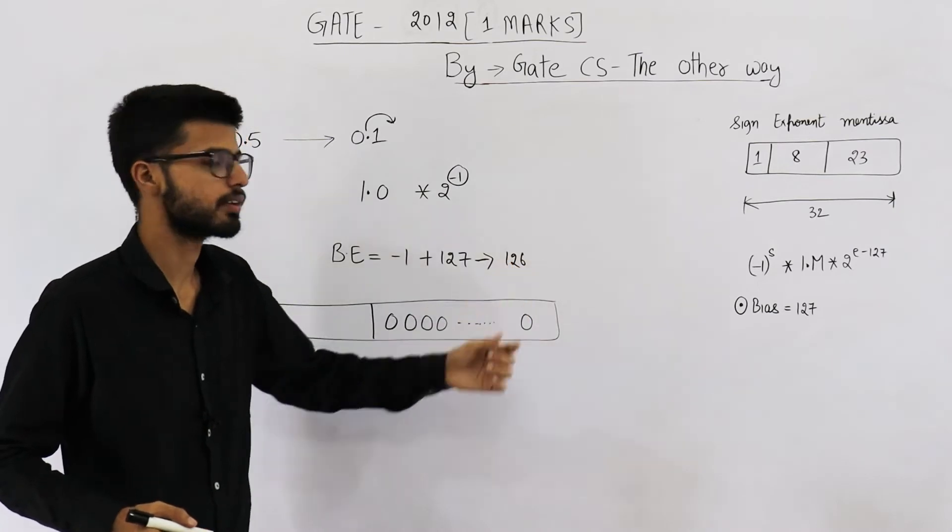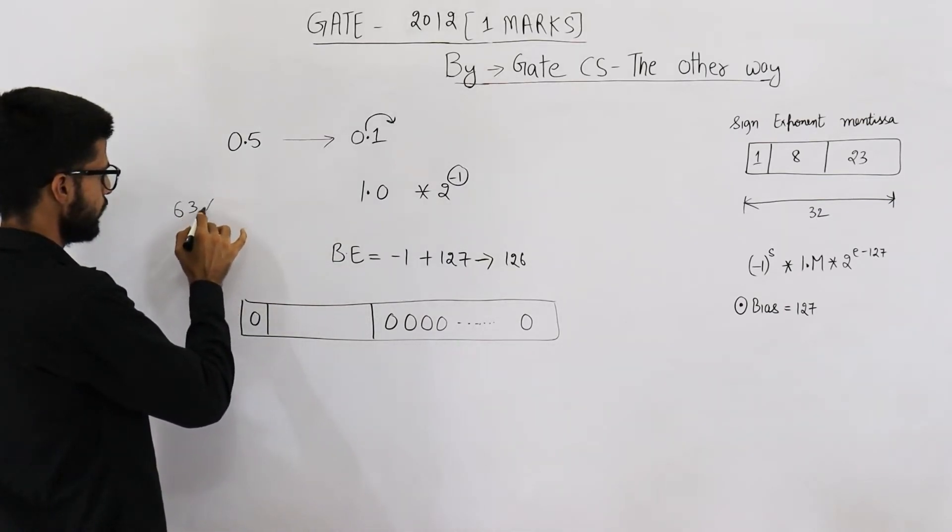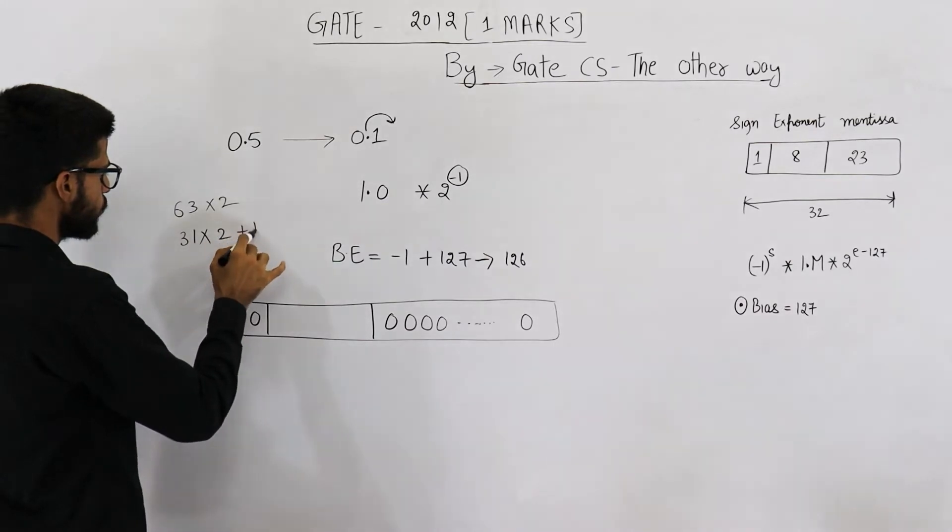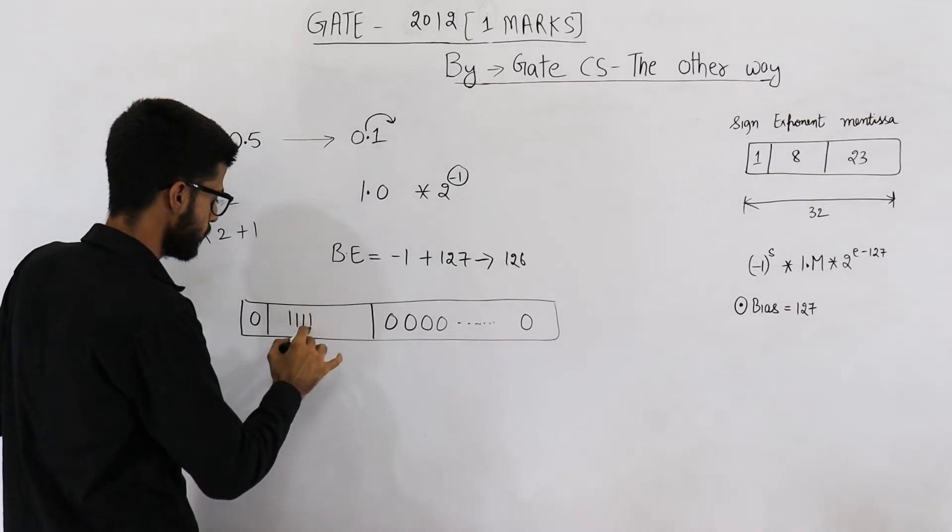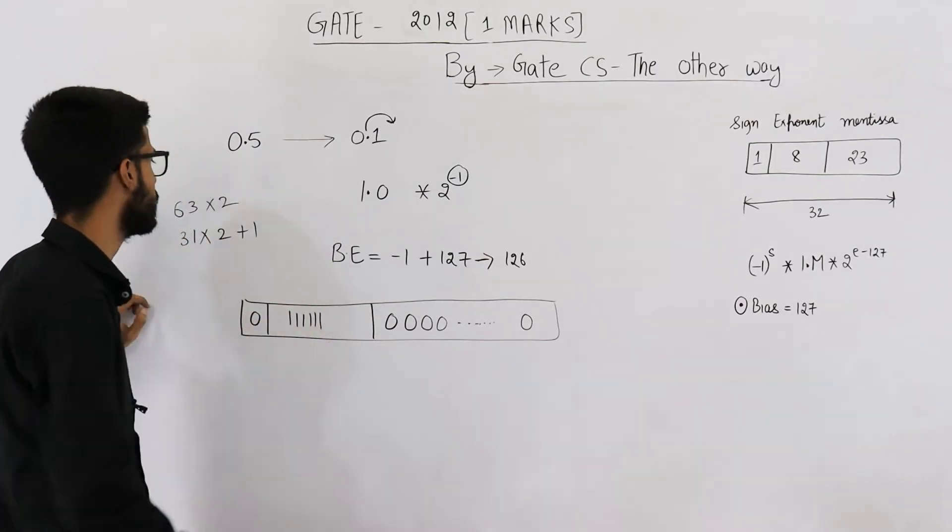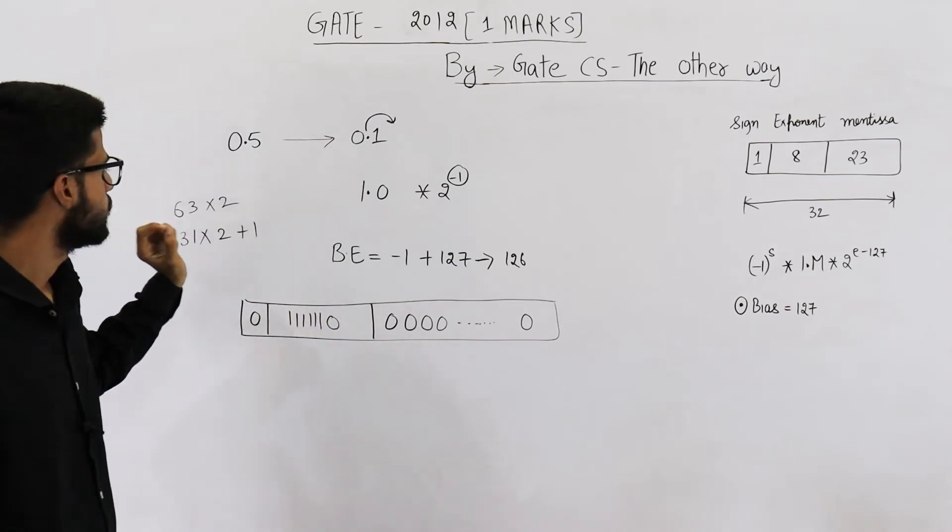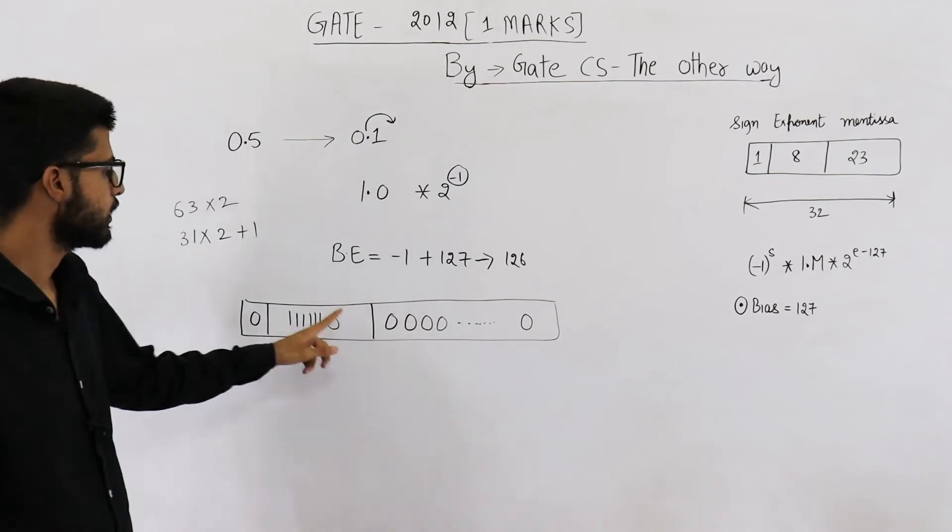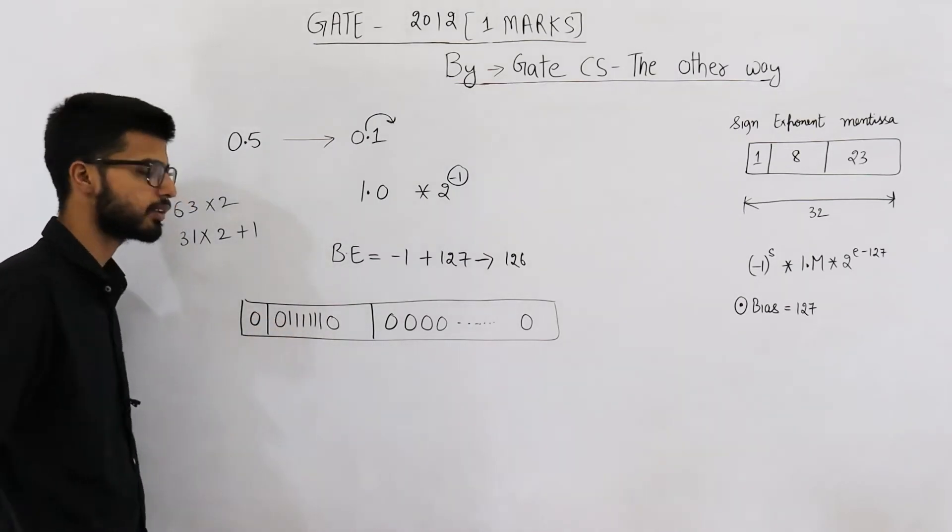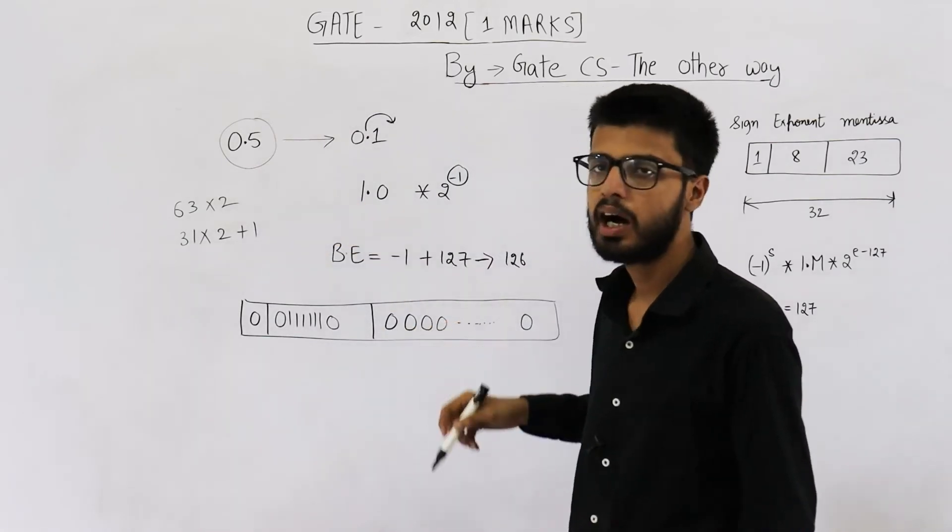Now let's see how can we save 126. 126 will be 63 into 2. 63 can be written as 31 into 2 plus 1. So 31 is 1, 1, 1 and 1. This number is 31. 31 into 2 plus 1, that means add a 1 extra. This is 63. 63 into 2 means add a 0. So this number is 126. Now we need to see if it's 8 bits. 0, 1, 2, 3, 4, 5, 6. This is 6 bits only. Sorry, these are 7 bits. If I add a 0 here, this will become 8 bits. So this is the representation for the number 0.5 in IEEE 32-bit format.